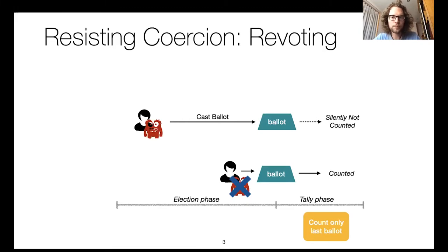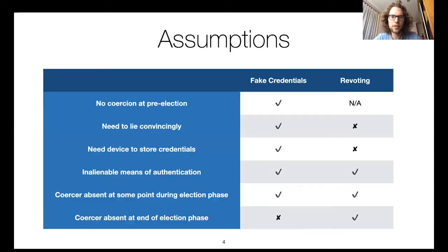The re-voting setting differs a little bit from the more well-known approach of fake credentials. In the fake credential approach, during a pre-election phase voters register with the voting system and obtain both a real credential and a fake credential. Whenever they're coerced, they provide the fake credential to the coercer claiming it's real. They need to lie convincingly and need a mechanism to memorize or store these credentials so that they can use them later.